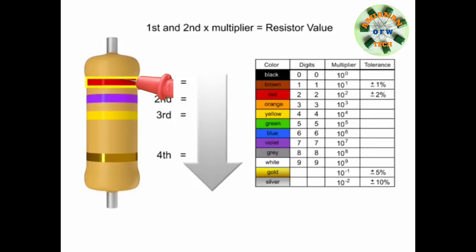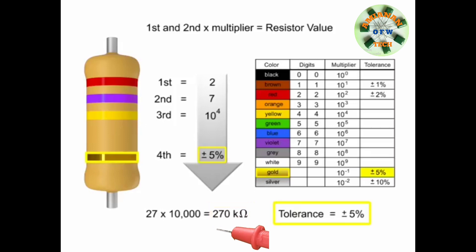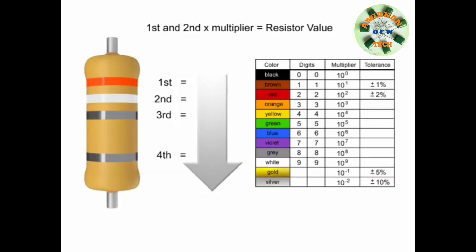The first band is red, so the first digit value is 2. The second band is violet, so digit 2 is 7. The third band is yellow, so we multiply the first two numbers by 10 to the 4th, or 10,000. Thus, the value of this resistor is 270 kOhms with a tolerance of plus or minus 5%.